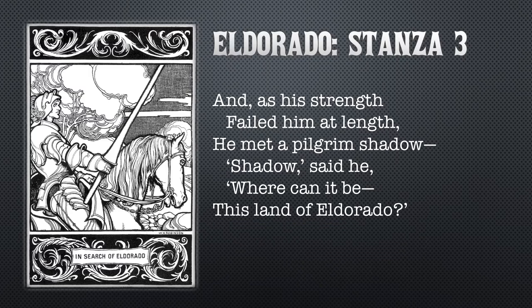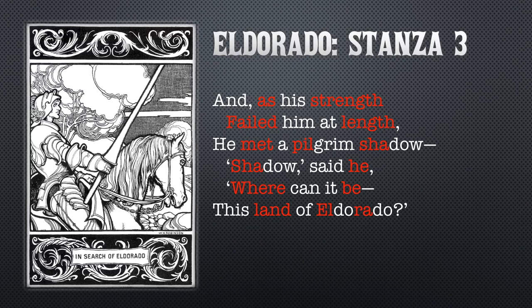The stress pattern is exactly the same as in the previous stanzas, and the verse lengths are all the same as the first and second stanzas. So we read: 'And as his strength failed him at length, he met a pilgrim shadow. Shadow, said he, where can it be, this land of El Dorado?' Now let's do it together — you ready? 'And as his strength failed him at length, he met a pilgrim shadow. Shadow, said he, where can it be, this land of El Dorado?'